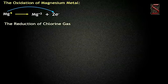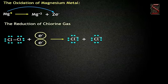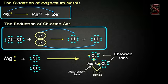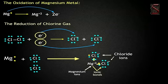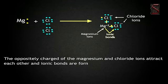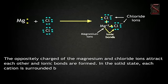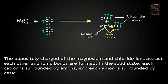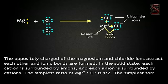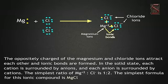The reduction of chlorine gas: chlorine is a diatomic element. The covalently bonded Cl₂ molecule gains two electrons to become two chloride ions (Cl⁻, anions). Chlorine is said to be reduced. Combining the oxidation and reduction processes, the overall effect is the transfer of two electrons from magnesium to chlorine. The oppositely charged magnesium and chloride ions attract each other and ionic bonds are formed. In the solid state, each cation is surrounded by anions and each anion is surrounded by cations. The simplest ratio of Mg²⁺ to Cl⁻ is 1:2, so the simplest formula is MgCl₂.